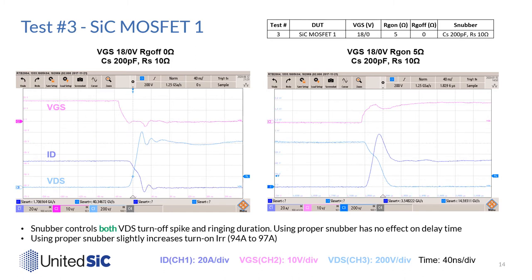In test 3, we keep RG on at 5 ohm but reduce RG off from 5 ohm to 0 ohm, and try to reduce EMI with snubber. The VDS turn-off spike is limited to 1000V and the ringing duration is damped to under 33 nanoseconds. So snubber is more effective to control both VDS spike and ringing. Plus, there is no extra delay time in turn-off. Using snubber, however, slightly increases turn-on reverse recovery current from 94A to 97A.